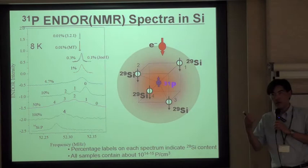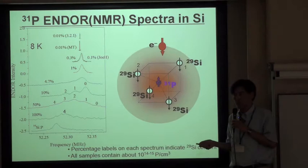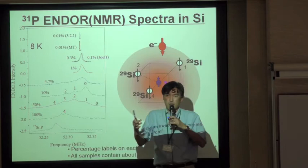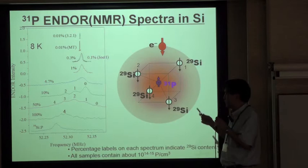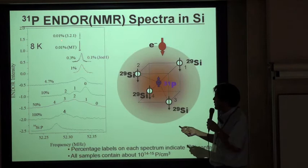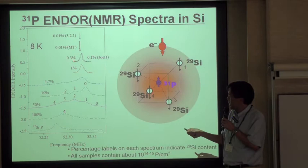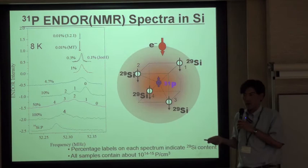Now I will show you the phosphorus-31 ENDOR — it's an NMR — when phosphorus is placed in silicon with varying amounts of 29Si background: 0.01%, 0.3%, 1%, 4.7%, and so on. The percentage indicates the background 29Si nuclear spin concentration around the phosphorus. When the background 29Si is very small, as small as 0.01%, the NMR peak position and peak width of phosphorus-31 is very sharp. As we increase the background 29Si, the peak position shifts to higher frequency and the width broadens.